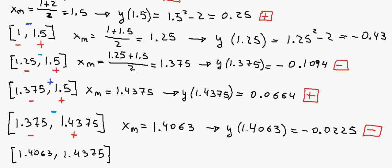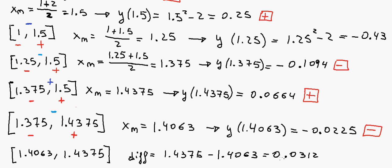We repeat the process: calculate the midpoint, the function at the midpoint. After this iteration we'll also check the accuracy. The new midpoint is 1.4063 and the value of the function at that point is minus 0.0225, so it's negative. Adding that to our interval, between 1.375 and 1.4063 we have negative and negative — nothing happens. So we forget about 1.375 and keep the interval 1.4063 to 1.4375, because the function is negative at 1.4063 and positive at 1.4375, so it changes sign and hence the root will be there.